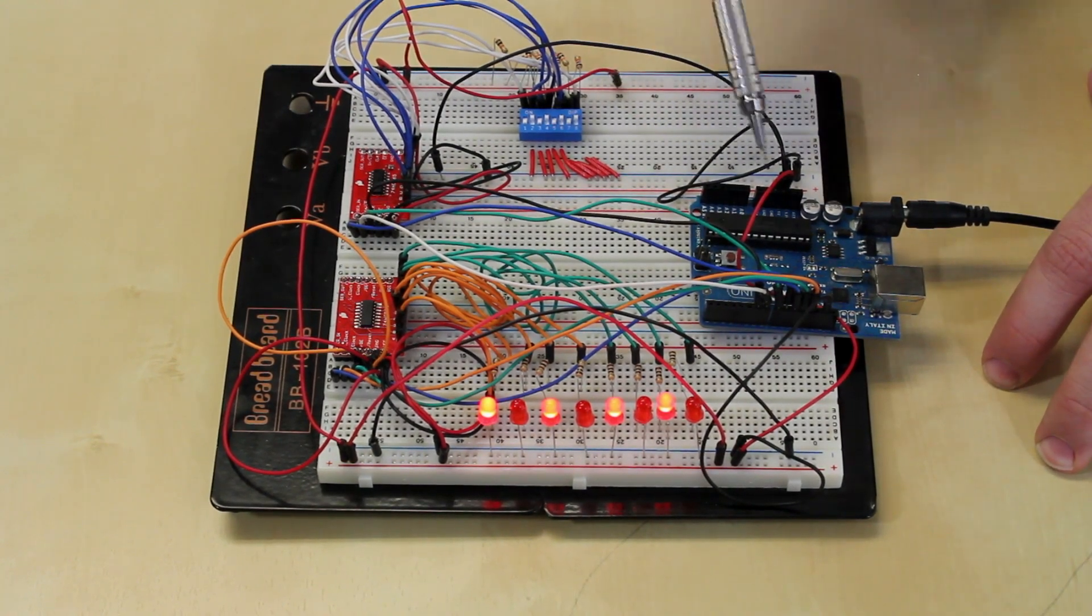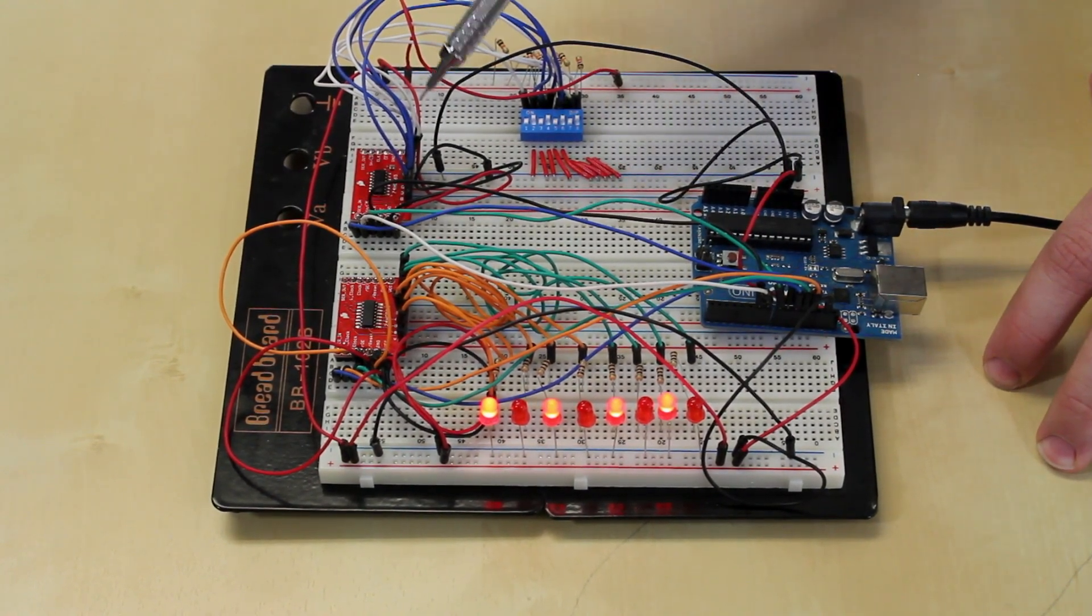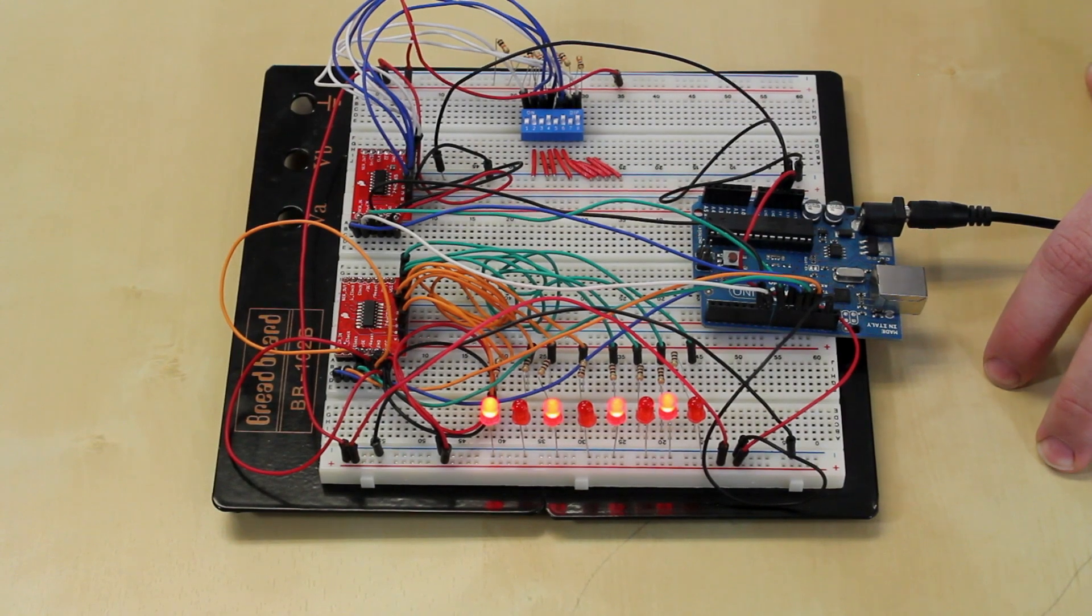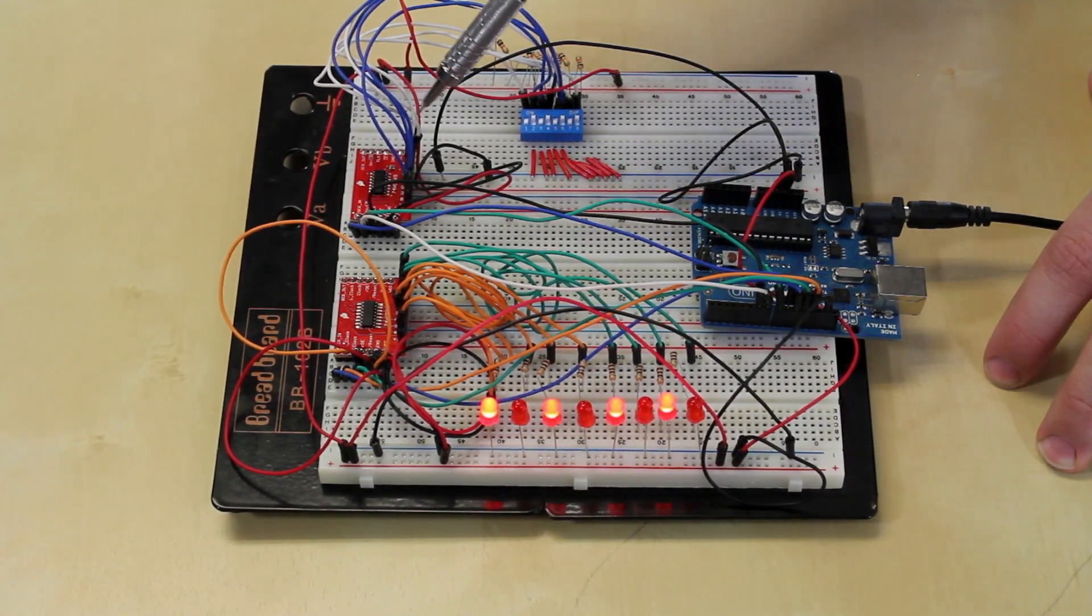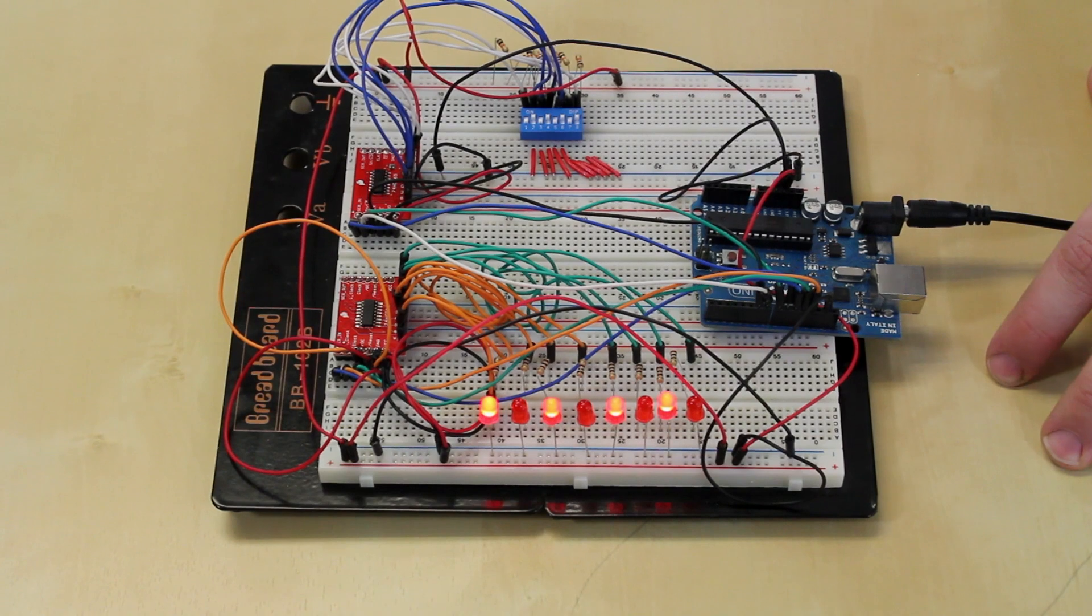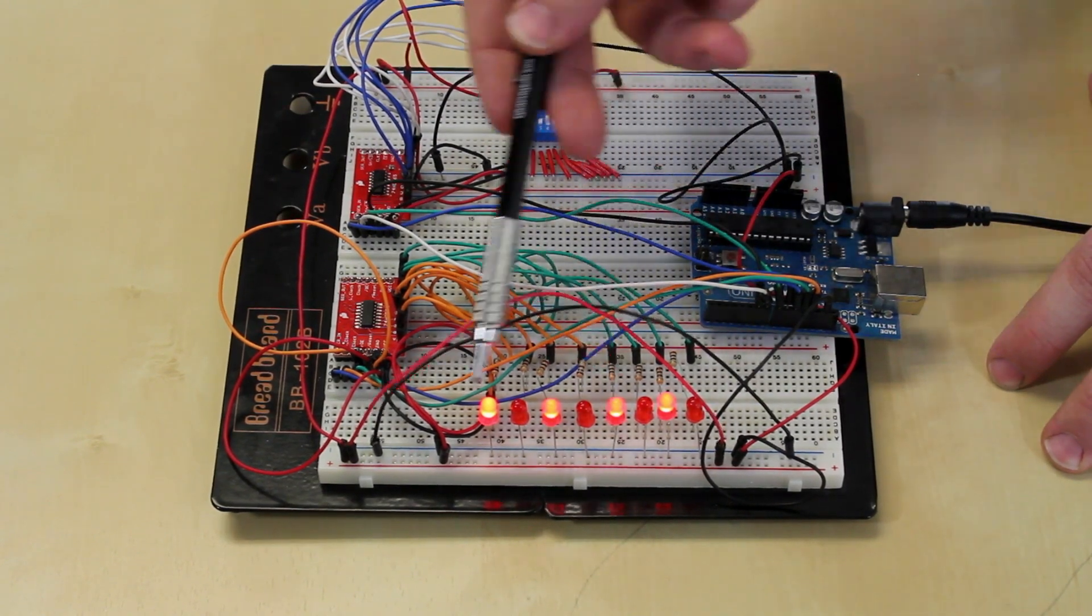So in our example here, I just have the Arduino looking for a change in the input shift register. When it sees a change, it just writes the input from that straight out to the output shift register, which displays them on these LEDs.